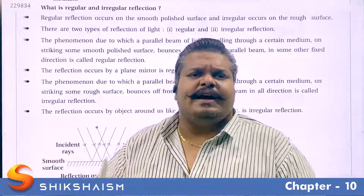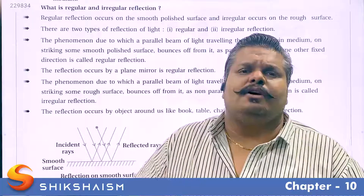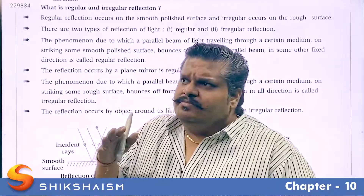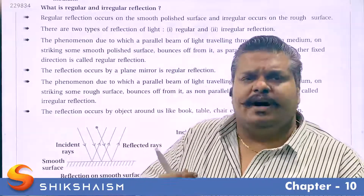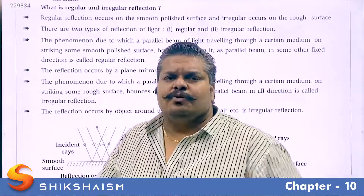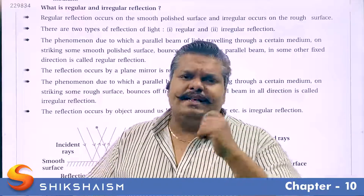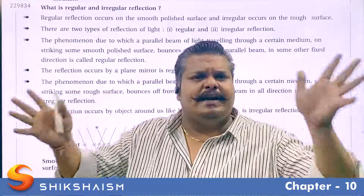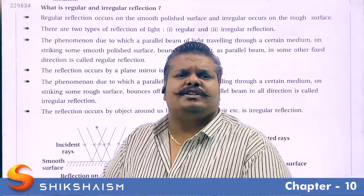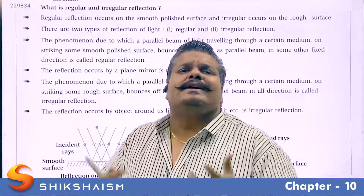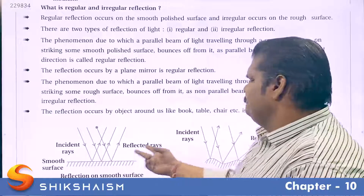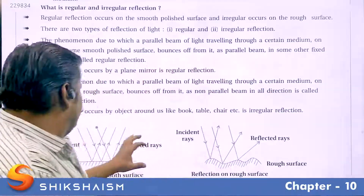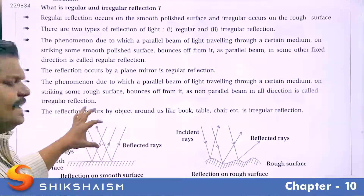When a parallel beam of light is incident on a rough or non-polished surface, after reflection the rays are not parallel but are spread over a wide area. This type of reflection is known as irregular reflection. Here we have a diagram representing regular reflection.